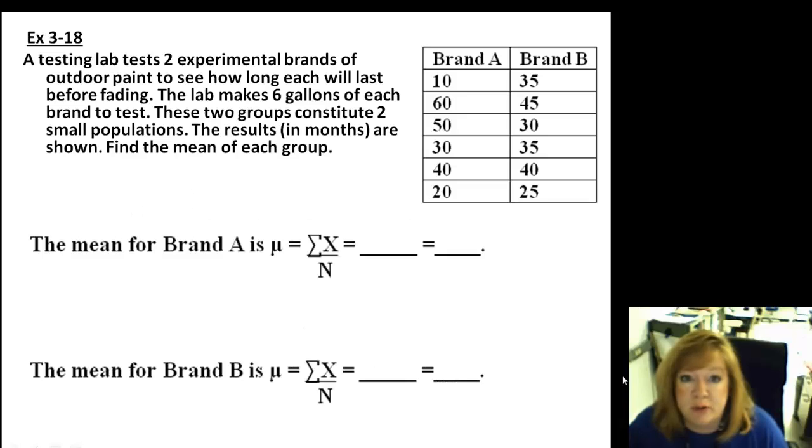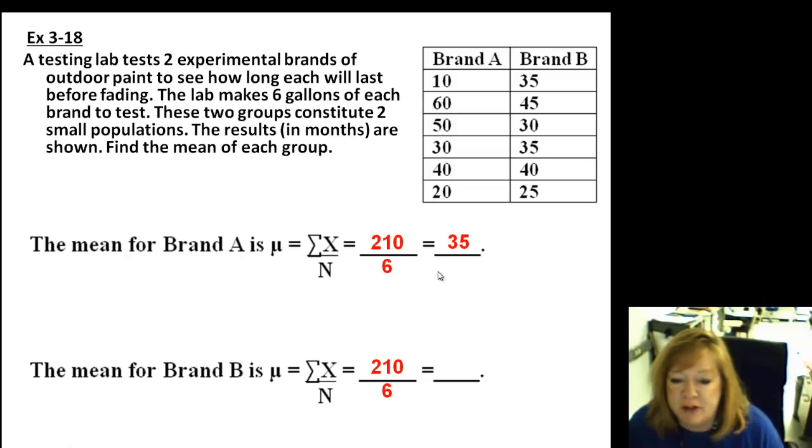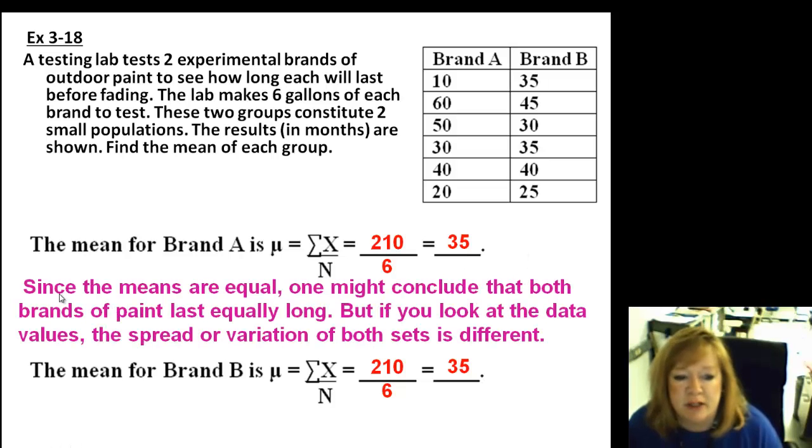The good thing is you already know what range is about. So here's two paint brands, brand A and brand B. They have tested them to see how long they last. The lab makes six gallons of each brand to test. The two groups constitute two small populations. The results are in months. When you calculate the mean, we add all these up and divide by the number of numbers, we end up with 35 for brand A and 35 for brand B. So you'd say they're about the same. But when you look at the data and how it's distributed, and the spread of variation, it's a very different story.